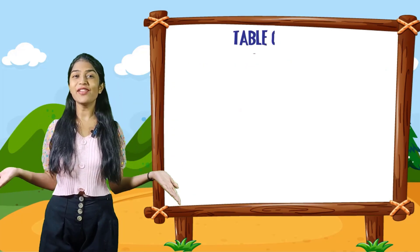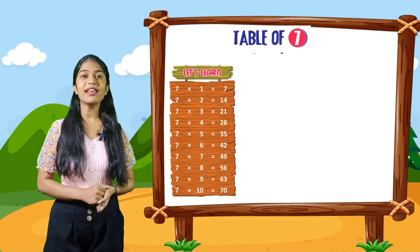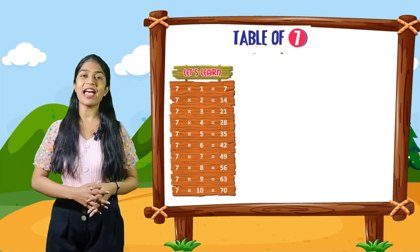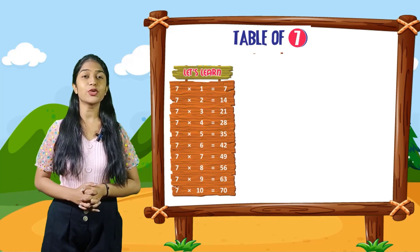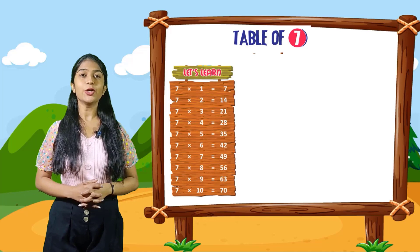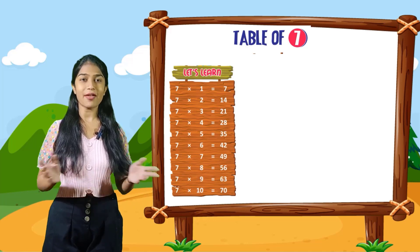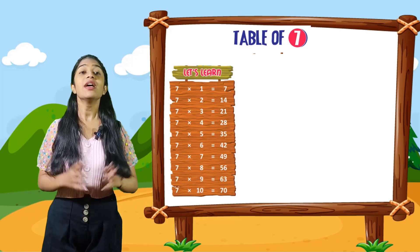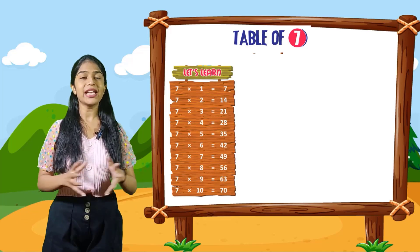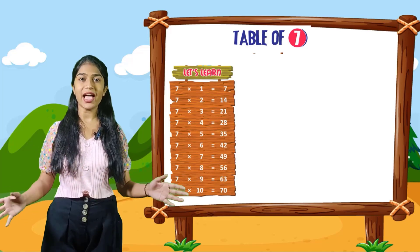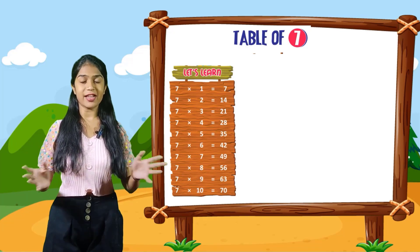So kids, now we will do the table of 7. So let's learn. 7 into 1 is equal to 7. 7 into 2 is equal to 14. 7 into 3 is equal to 21. 7 into 4 is equal to 28. 7 into 5 is equal to 35. 7 into 6 is equal to 42. 7 into 7 is equal to 49. 7 into 8 is equal to 56. 7 into 9 is equal to 63. 7 into 10 is equal to 70.